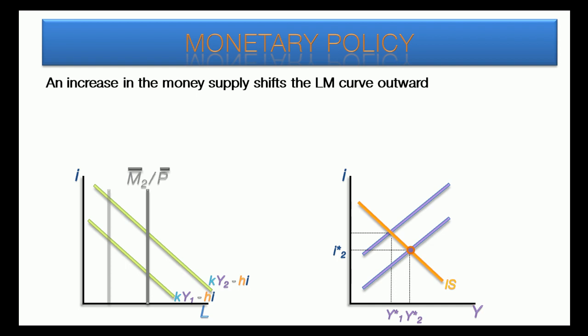At this point, the interest rate and income stabilize and the economy reaches equilibrium. So the end result of the policy of increasing the money supply is lower interest rates and a higher level of national income.